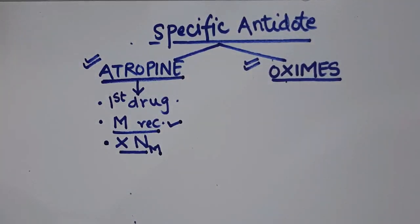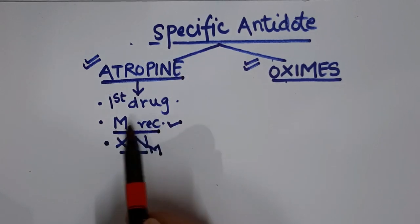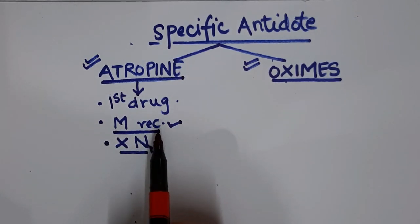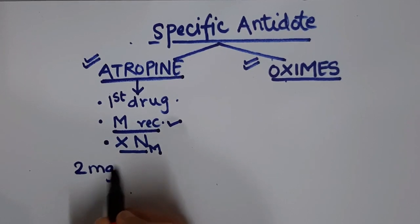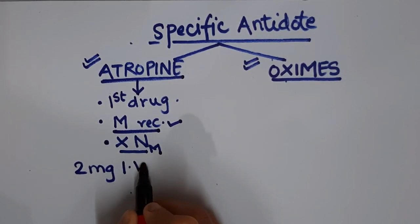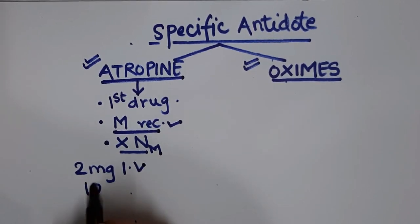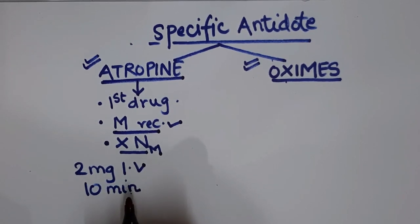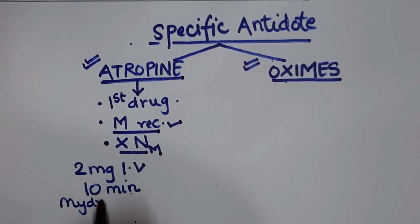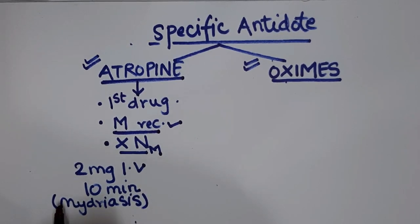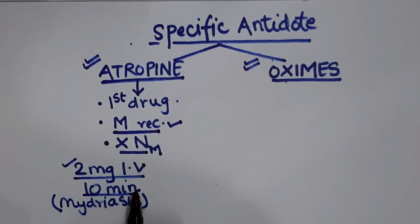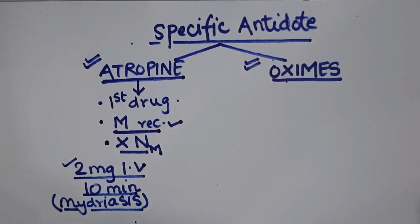Atropine is the first drug given to stop all muscarinic side effects. We give 2 mg IV of atropine, repeated every 10 minutes until signs of atropinization appear — such as mydriasis. We keep giving 2 mg IV atropine at 10-minute intervals until mydriasis is observed.